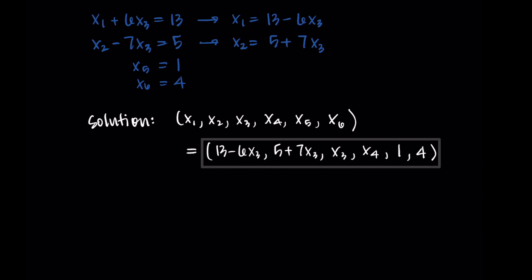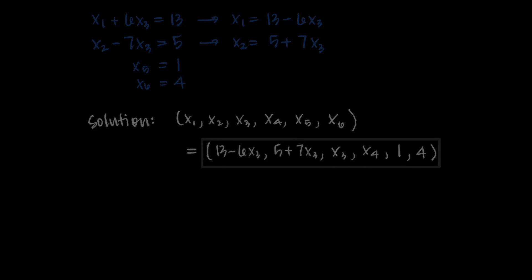So x3 and x4 can be any real number, and x3 affects what x1 and x2 are. Pivot positions help us determine the basic and free variables, giving us a more formal way to write solutions to dependent systems. In an independent system we have only basic variables, but for dependent systems this formalized process ensures we all write solutions consistently.